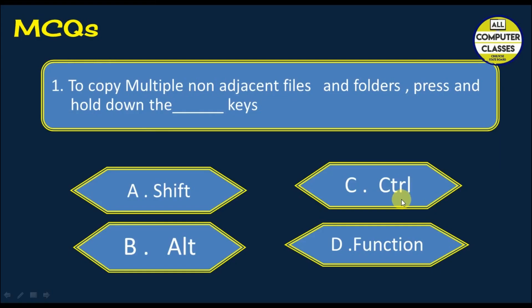Starting with multiple choice questions. The first one is to copy multiple non-adjacent files and folders, press and hold down which key? Will it be shift, alt, control, or function key? If you remember, control key is used for randomly selecting the files, and for adjacent files we use shift key.